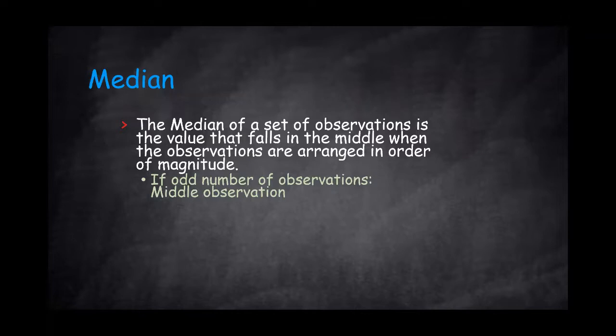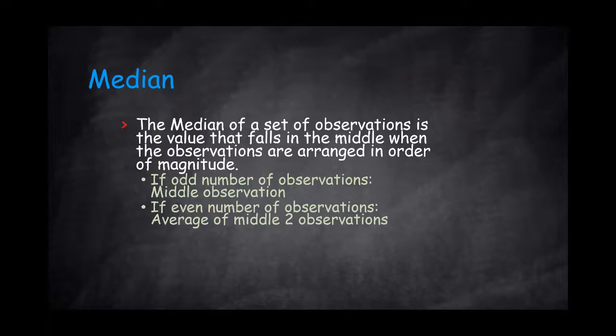If you have an odd number of observations, the middle observation will be the median. If you have an even number of observations, you will need to average the middle two observations. Usually, the median is not affected or very slightly affected by extreme values.